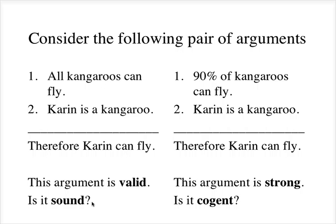But it's not cogent, for the same reasons as the original kangaroo argument was not sound. Because it is not true that 90% of kangaroos can fly — 0% of kangaroos can fly. And sadly, it is still not true that I am a kangaroo.